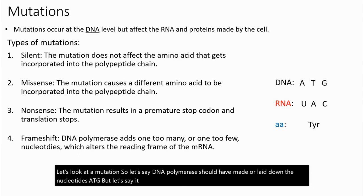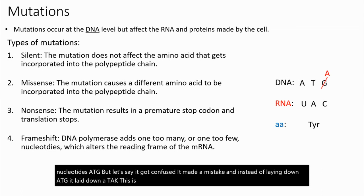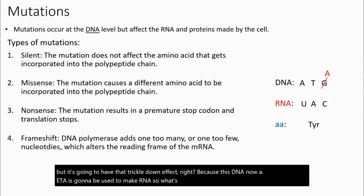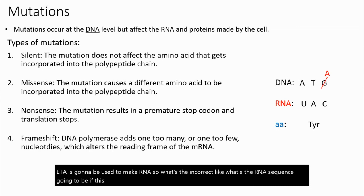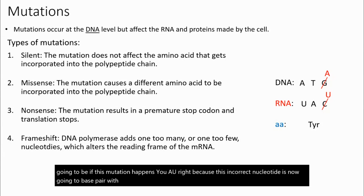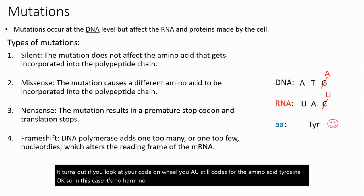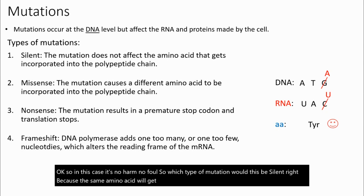Now let's look at a mutation. DNA polymerase should have laid down ATG, but instead it laid down ATA — a point mutation at one position. This affects the RNA, which now becomes UAU. But if you check the codon wheel, UAU still codes for tyrosine. So this is no harm, no foul — the same amino acid gets incorporated. This would be a silent mutation because the cell doesn't even know there's a problem.